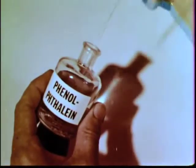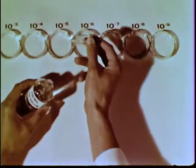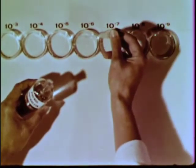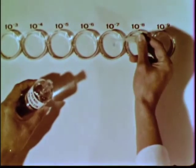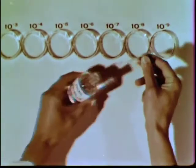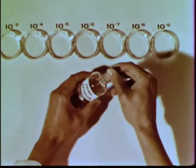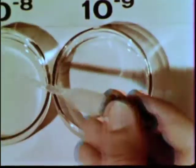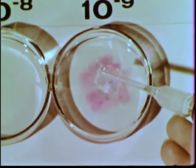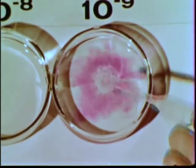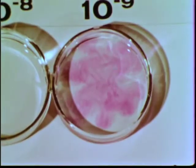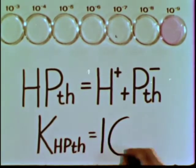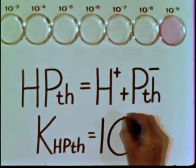Here is still another indicator, phenolphthalein. As we add this indicator to solutions of varying acidity, we see that it is colorless until the hydronium ion concentration is about 10 to the minus 9 molar, where the phenolphthalein becomes colored. Therefore, the ionization constant of phenolphthalein is about 10 to the minus 9.